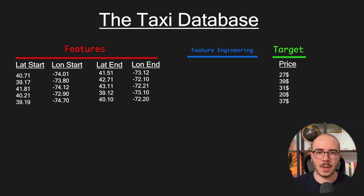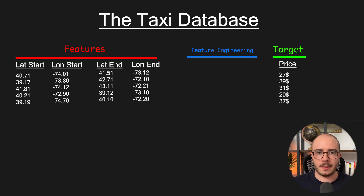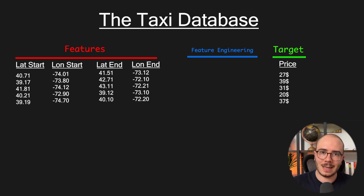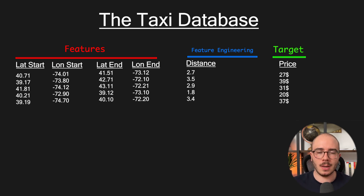It will be pretty simple. We will create one feature that captures all the information in those four raw columns. We have the start point in latitude and longitude and the end point in latitude and longitude, so we create the distance between the start point and the end point in kilometers or miles. This gives a much better relation between this new feature — the distance — and the target — the price — and it will really boost the accuracy of the model. That's the goal of features engineering: help your model to be more accurate.